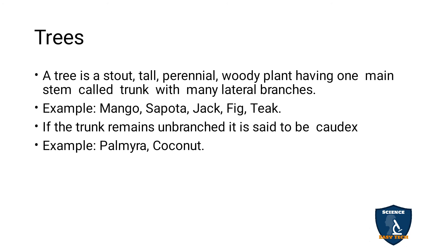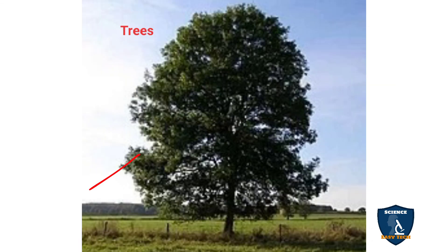Next, trees. A tree is a stout, tall, perennial woody plant. The trees are tall, straight, stout, and live for many years — they have a large trunk and possess lateral branches. Examples for trees: mango, sapota, jackfruit, fig, teak. If the trunk remains unbranched, it is called caudex — example: palmyra palm (panai maram in Tamil) and coconut. They don't have branches; the leaves are at the top. Such an unbranched tree is called caudex.